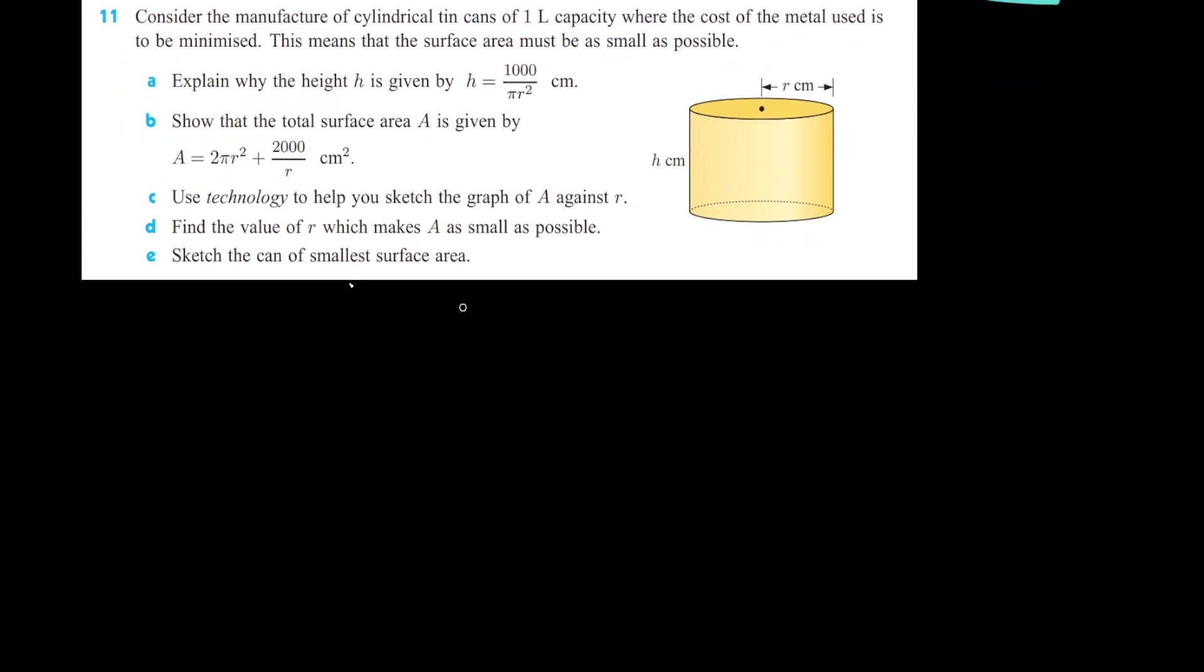Okay, so moving on to the next question. Consider the manufacture of cylindrical tin cans of 1 liter capacity, where the cost of the metal used is to be minimized. This means that the surface area must be as small as possible. So when we're talking about surface area, it's important to remember your basic geometry. The reason why they have 1,000 here is because they converted this 1 liter into milliliters.